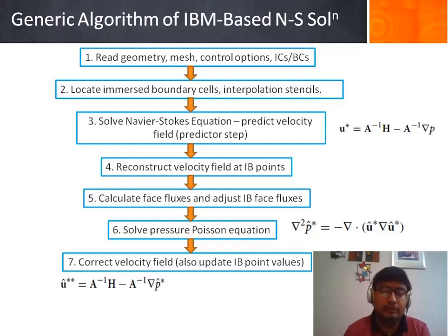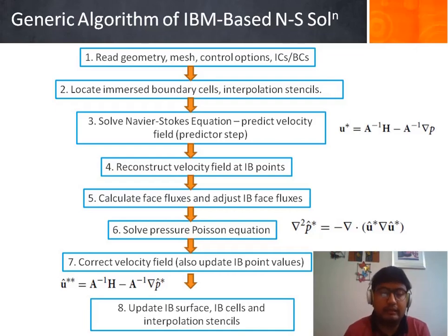The next step would be to solve the pressure Poisson equation to correct the pressure value. Based on the corrected pressure P star imposed with the immerse boundary condition, the velocity field is corrected and updated in the IB point values. Lastly the IB surface is updated based on the body motion and the IB cells and interpolated stencils are again identified for the next time steps and the process continues from step 3.